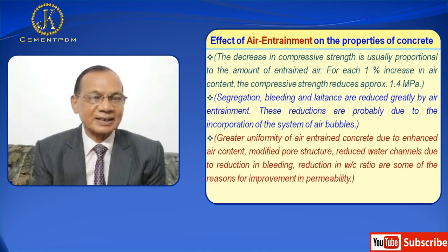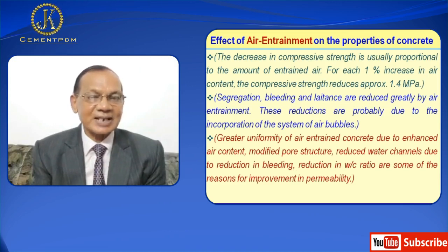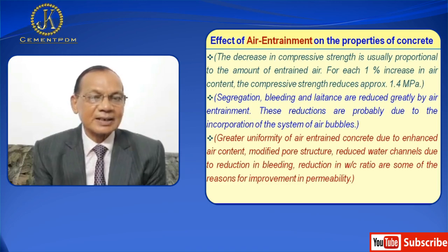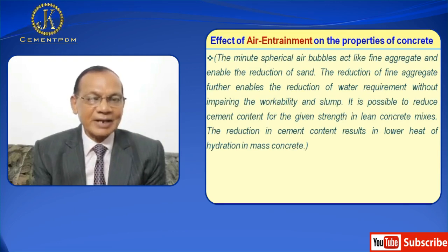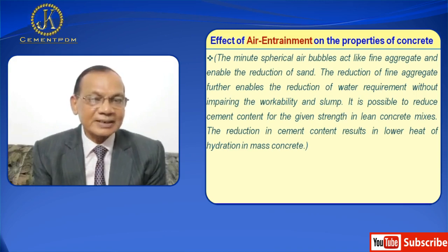The decrease in compressive strength is approximately proportional to the amount of entrained air; for each one percent increase in air content, the compressive strength reduces by approximately 1.5%. Segregation, bleeding and laitance are reduced greatly by air entrainment, probably due to the incorporation of the system of air bubbles, greater uniformity of air entrained concrete, enhanced air content, modified pore structure, and reduced water channels due to reduction in bleeding and reduction in water-cement ratio. The minute spherical air bubbles act like fine aggregate and enable reduction of sand content.